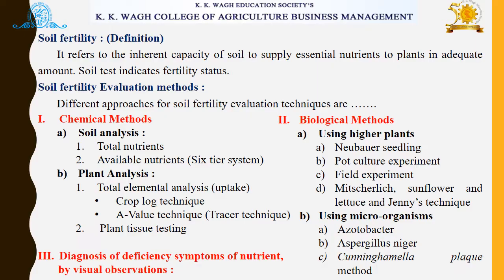Soil fertility refers to the inherent capacity of soil to supply essential nutrients to plants in adequate amounts. There are different soil fertility evaluation methods. Under that there are three major types: chemical methods, biological methods, and the third one is diagnosis of deficiency symptoms of nutrients by using visual observations.